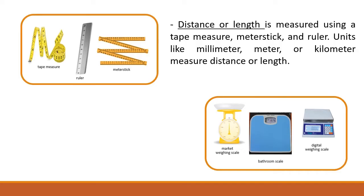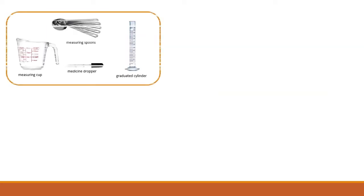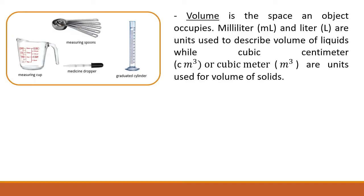Another example: market weighing scale, bathroom scale, digital weighing scale. Mass measures the amount of matter in an object using a balance. Milligram, gram, and kilogram are units used to measure mass. Other measuring tools include: measuring cup, medicine dropper, measuring spoons, and graduated cylinder. Volume is the space an object occupies. Milliliter and liter are units used to describe the volume of liquids.